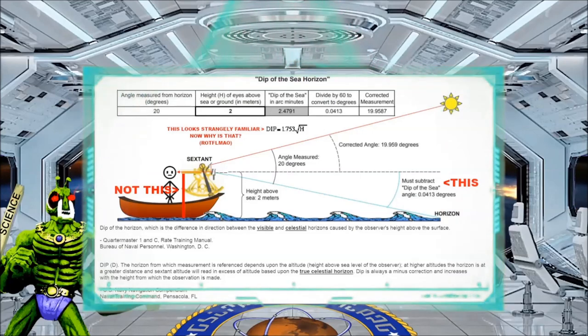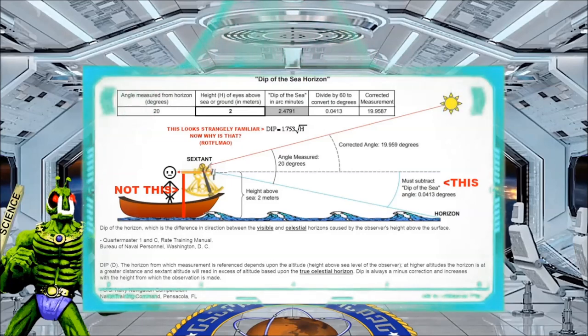According to established civilian seafarer organizations and the U.S. Navy, the correction is done without changing observer height. So, Stickman, what's that calculation you say we can't use? 1.22 times the square root of the observer's height in feet.